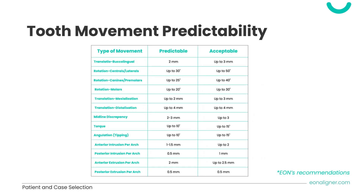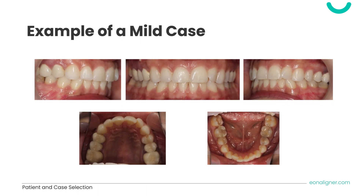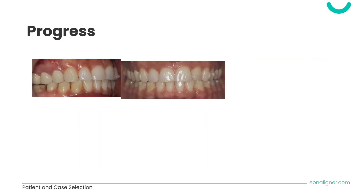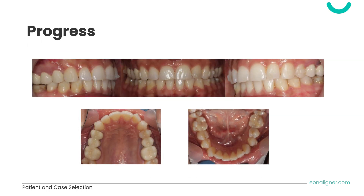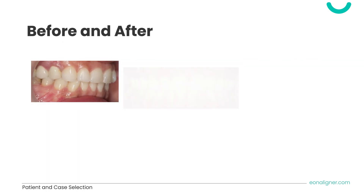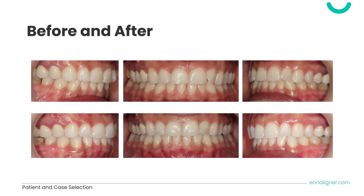This is a summary of all the tooth movements discussed. We will now showcase examples of variable severity treated with Eon aligners, starting with a mild case. Observe the mild crowding in both arches and the midline shift. Watch how the midline shifting and crowding are resolved. Here are the before and after photos — the treatment objectives have been met.